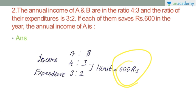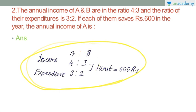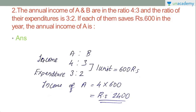4 times 600 will be Rs.2,400 for A's income, and 3 times 600 will be Rs.1,800 for B's income. So we get the value of the unit. The income expenditure problem uses the ratio equalling method. The annual income of A is Rs.2,400.